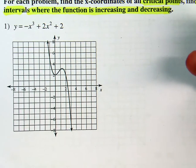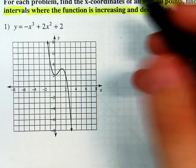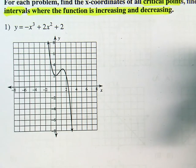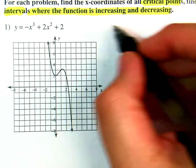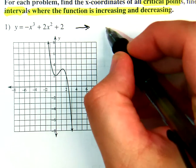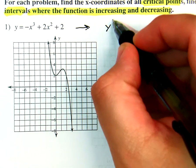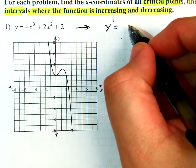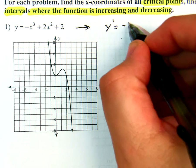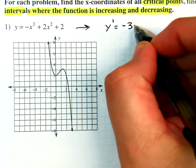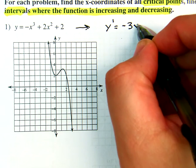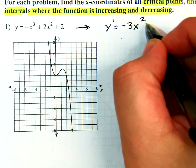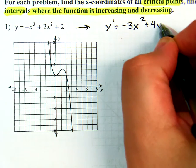So what we should do — take the derivative. From the function I need y prime. That gives us negative 3x squared plus 4x.